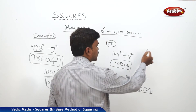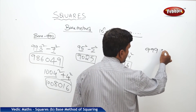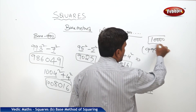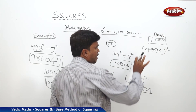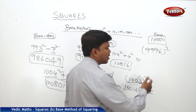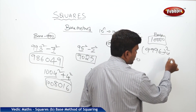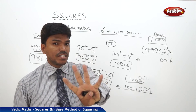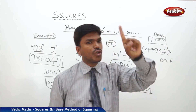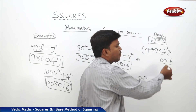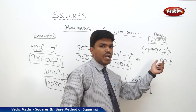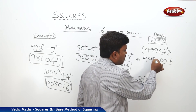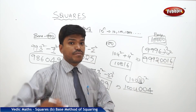What about base 10,000? It doesn't matter — we can easily calculate. Suppose I need 9996 squared. The base is 10,000. Compare 9996 with 10,000 — it is 4 less. What is 4 squared? 16, but write 0016 because the right side part should consist of 4 digits, since there are 4 zeros in 10,000. Left side: 9996 minus 4 is 9992. So the answer is 99920016.